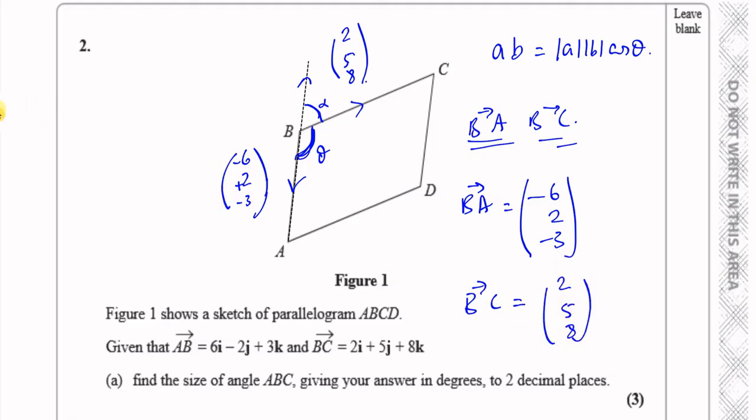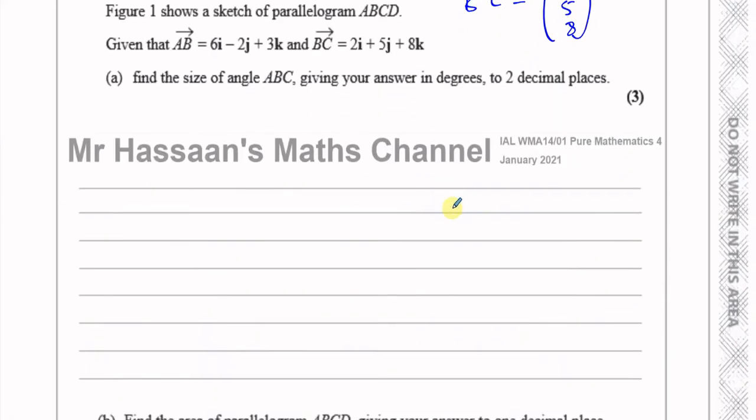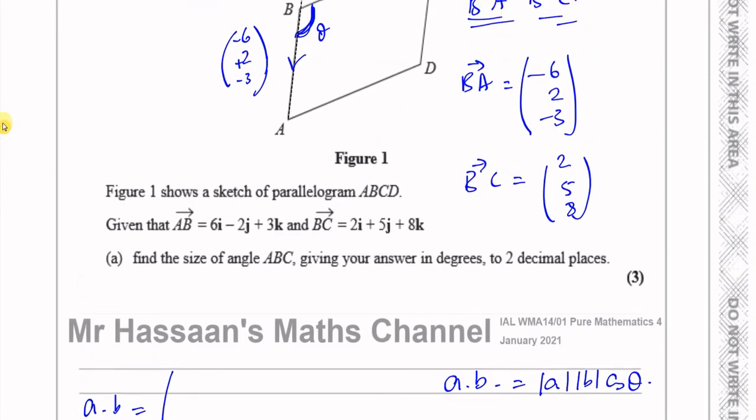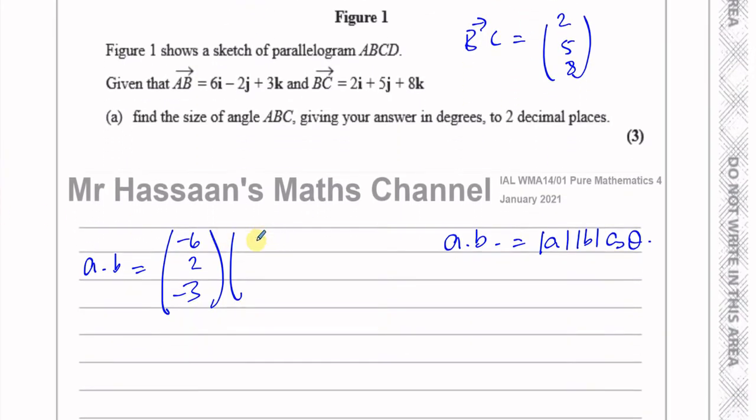So I can use the fact that the dot product of these vectors is equal to the magnitudes multiplied times the cosine of the angle between them. So I need to find the dot product of these two vectors, BA times BC: minus 6, 2, minus 3, times the vector BC: 2, 5, 8.